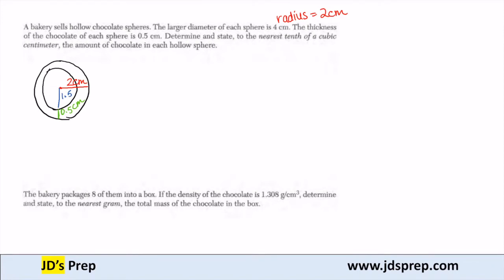We're going to use that in order to figure out the amount of chocolate in each hollow sphere. In order to do that, we're going to figure out the volume of the outer sphere, the volume of the inner sphere, and then we can subtract the two to figure out the amount of chocolate.